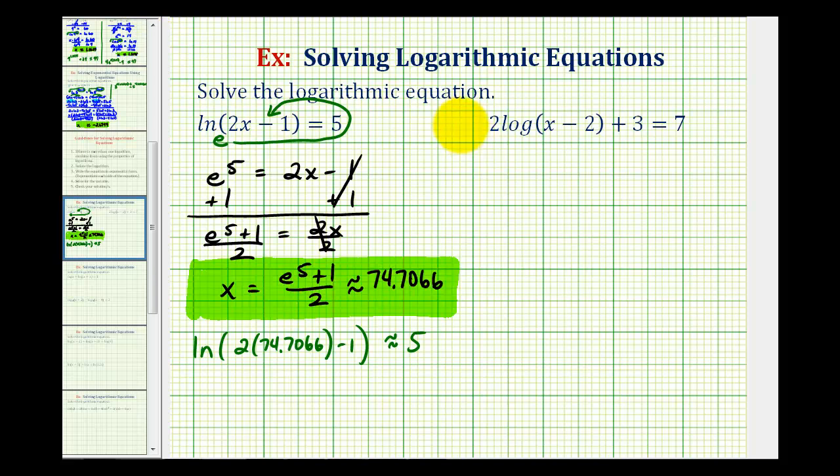Now looking at our second equation, we do have a single log, but we do need to isolate the log before we write this as an exponential equation. So we need to undo this plus three and undo this multiplication with the two. We'll start by subtracting three on both sides of the equation.